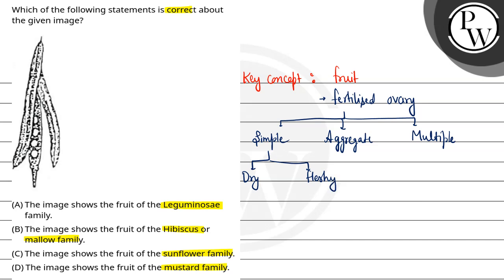In dry fruit, the pericarp is dry, not fleshy. Whereas in fleshy fruit, the pericarp is fleshy and fibrous. Dry fruit is further divided into three types: dehiscent fruit, schizocarpic, and indehiscent fruit.